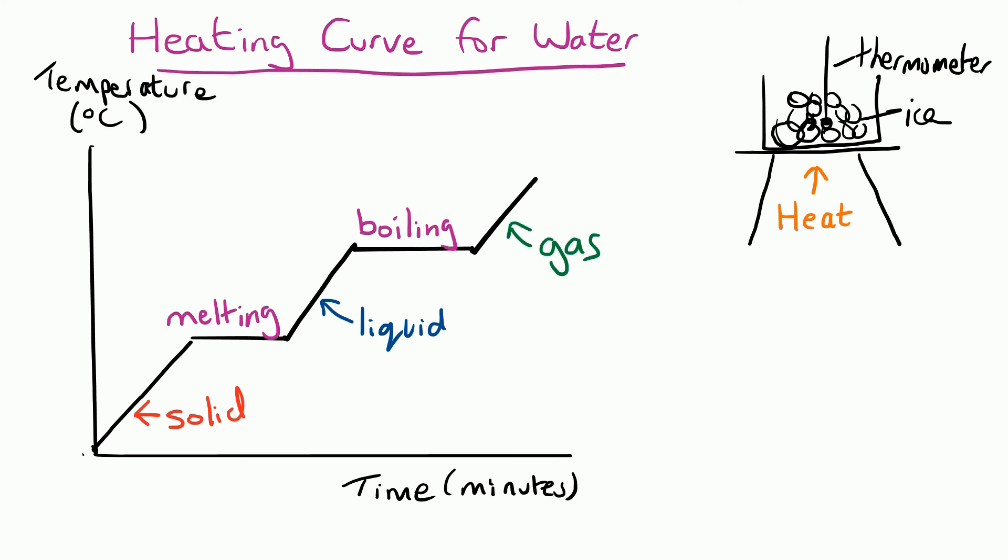Now if this was a heating curve for water, we could actually put some temperatures on here. So we know that ice melts at zero degrees, and similarly water boils at a hundred degrees, so it changes from a liquid to a gas at a hundred degrees. Make sure you can label the different parts of a heating curve like this with the changes of state, melting and boiling, and also where the three states of matter are.